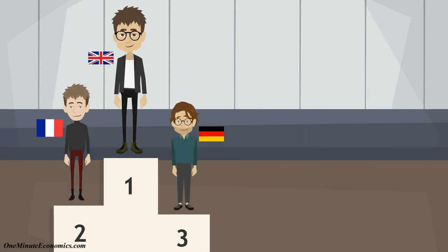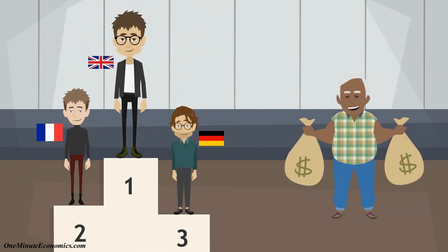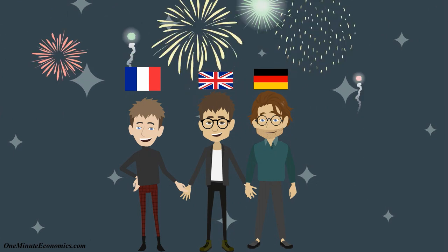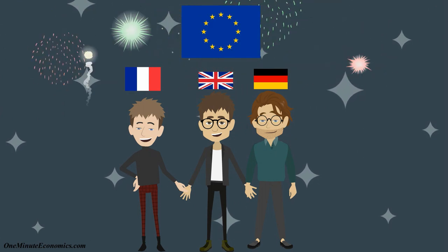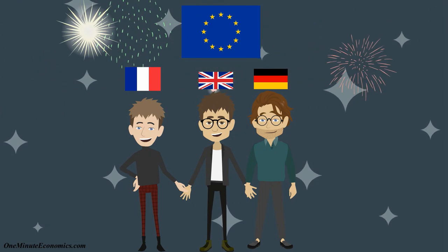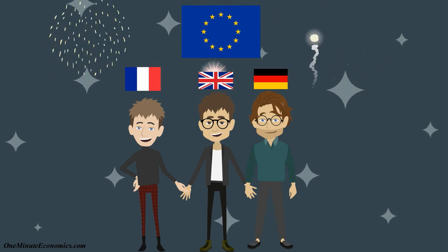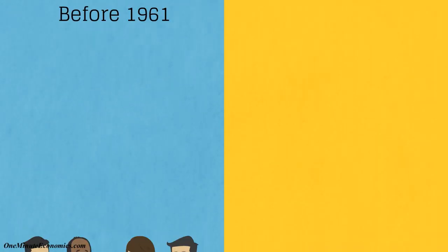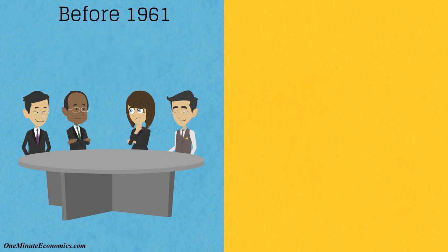The main beneficiary of the Marshall Plan and OEEC was the United Kingdom, followed by France and West Germany. With the help of the OEEC, the European Economic Community, which has since turned into the European Union, established a European Free Trade Area. By the end of the 50s, some OEEC members thought the goal of rebuilding Europe had been reached.